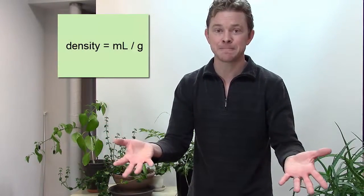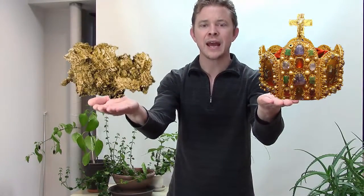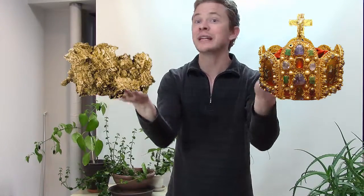He could weigh the crown, combine that with the volume, and solve for the density. Then he could take the crown and a known piece of solid gold and compare their densities.